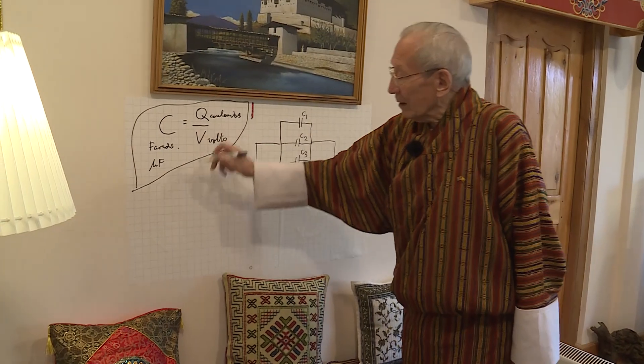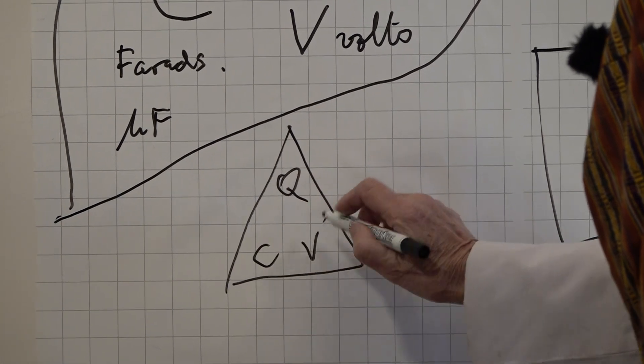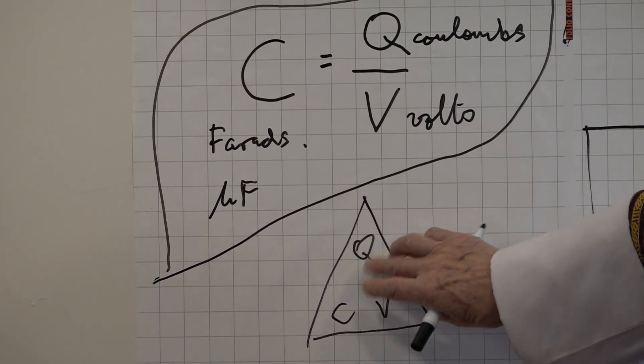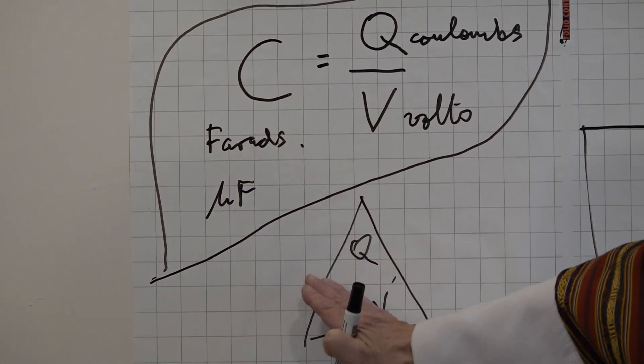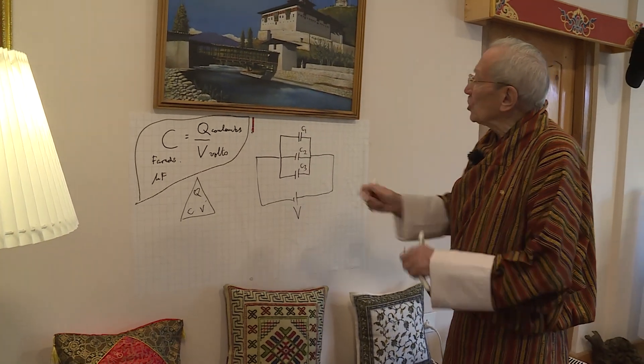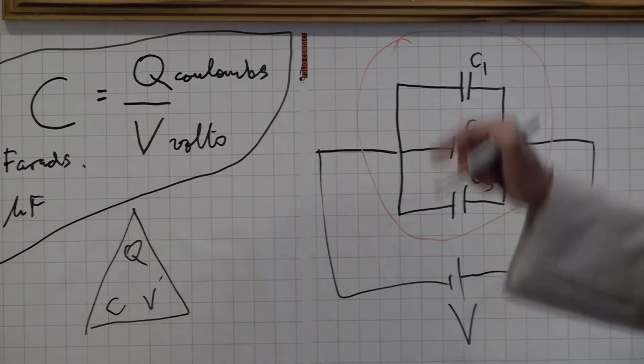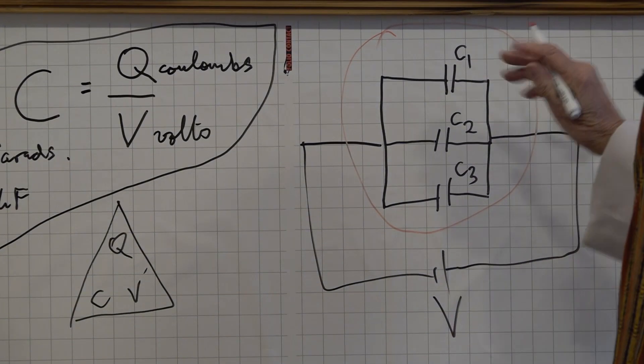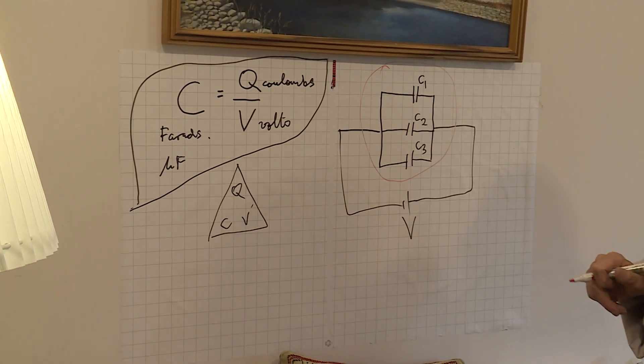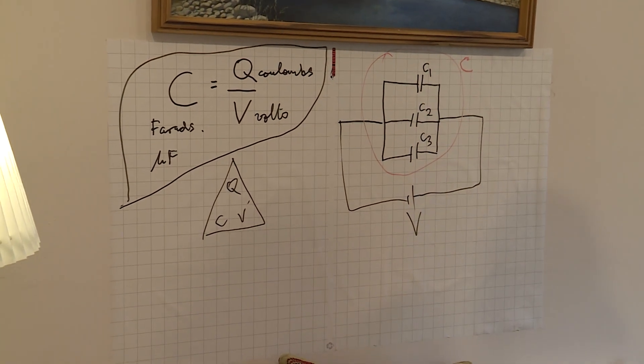Remember that C equals Q over V. That means, if we remember our remembering triangle, Q, C, V. Q equals CV. So, if I want to know V, it'll be Q over C. If I want to know C, it'll be Q over V. Now, what we're thinking about is, what single capacitor would have the same capacitance as those three in parallel? What single capacitor could I put there to have the same total capacitance as those three altogether?